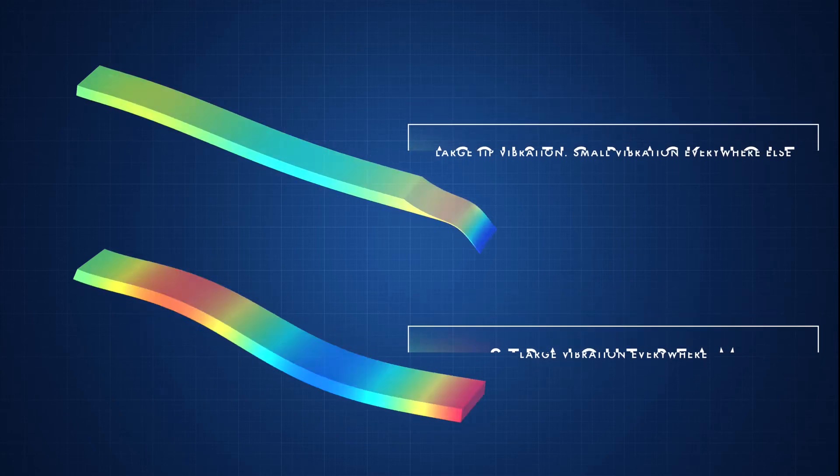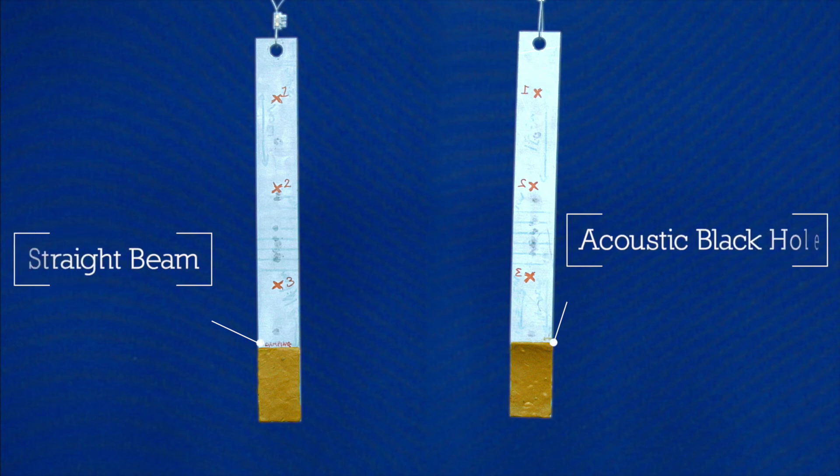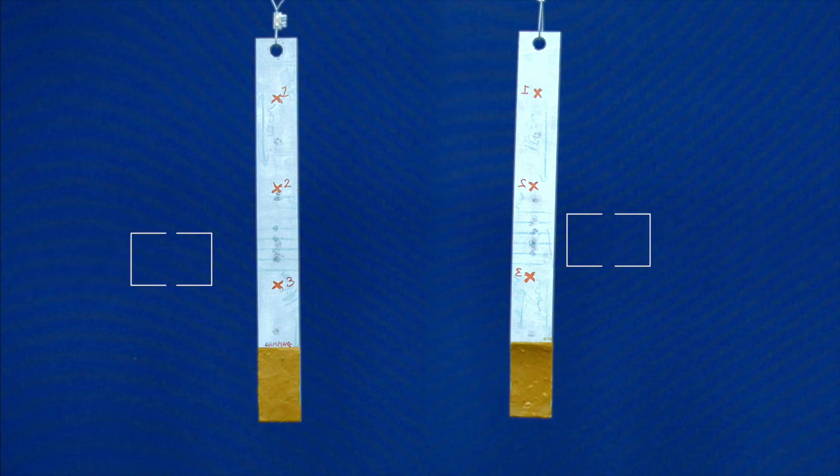Take a listen. Here we have two aluminum beams, one without an acoustic black hole and one with. We have a thin layer of damping material like Blu Tac stuck to each which absorbs vibrations.